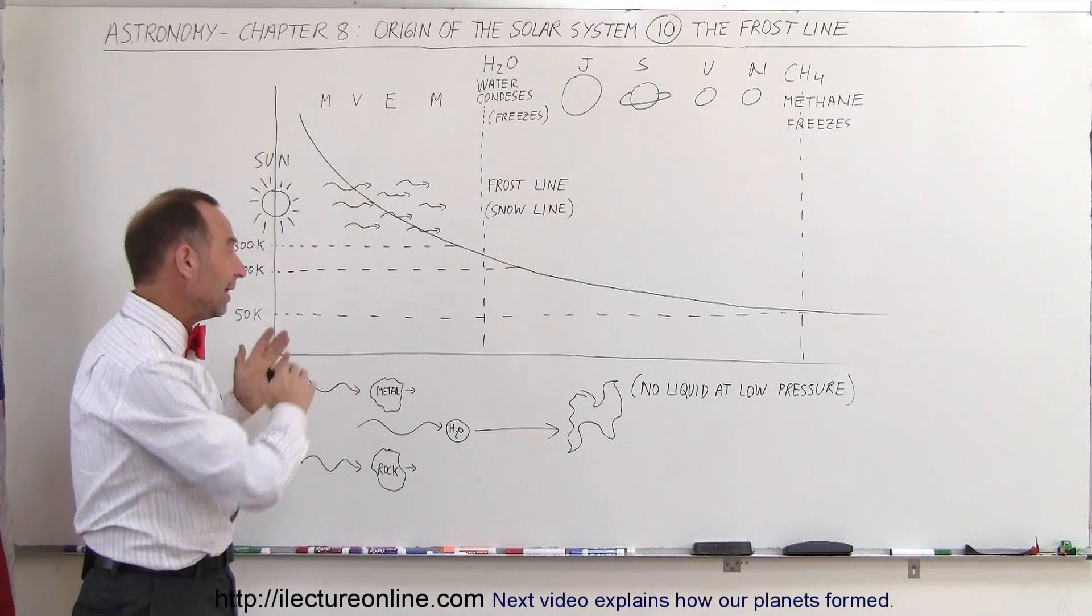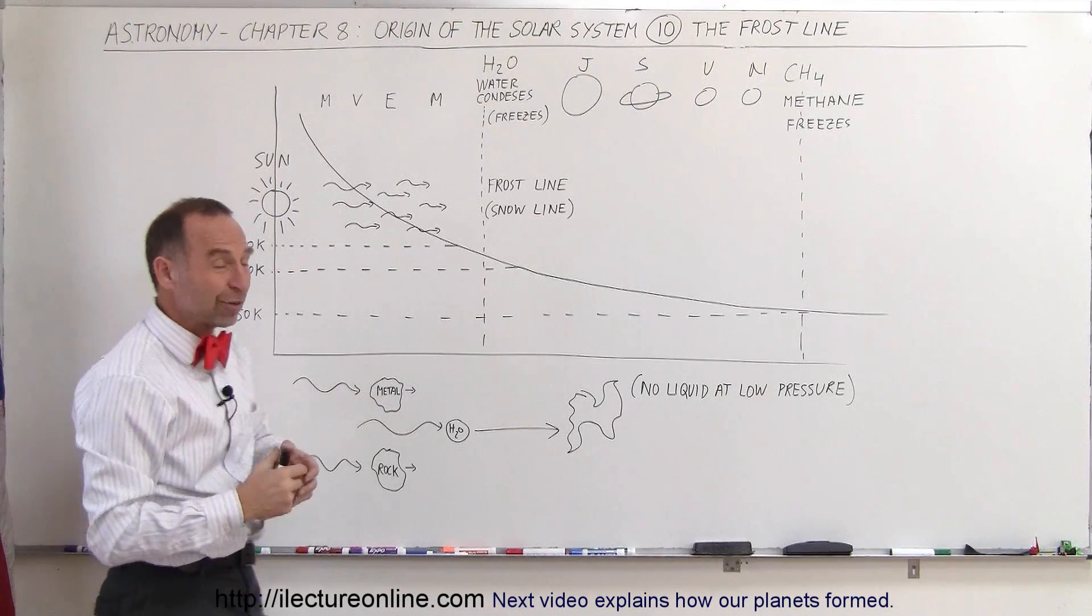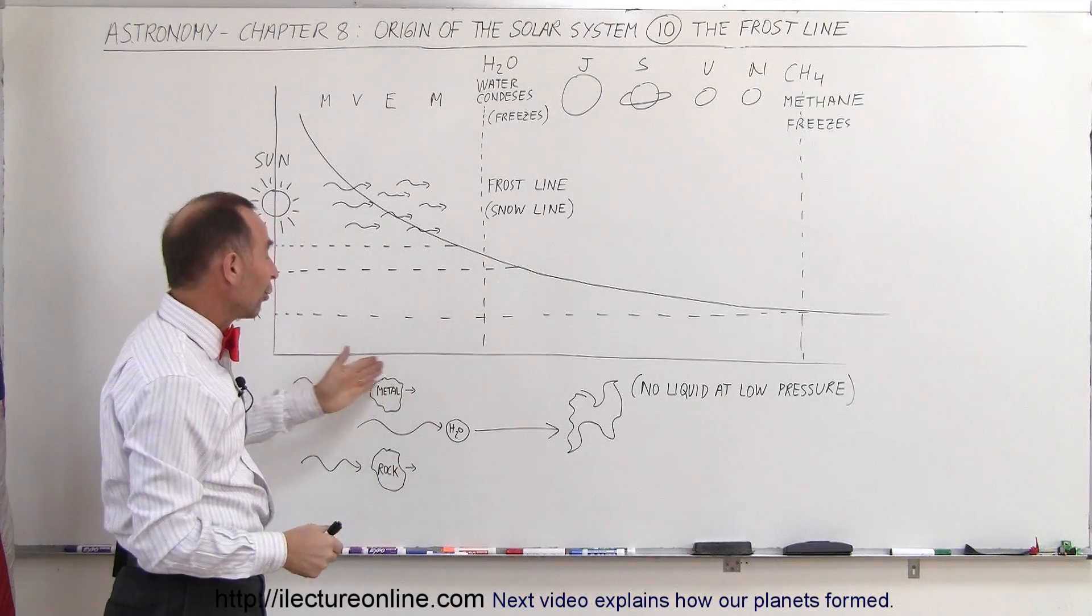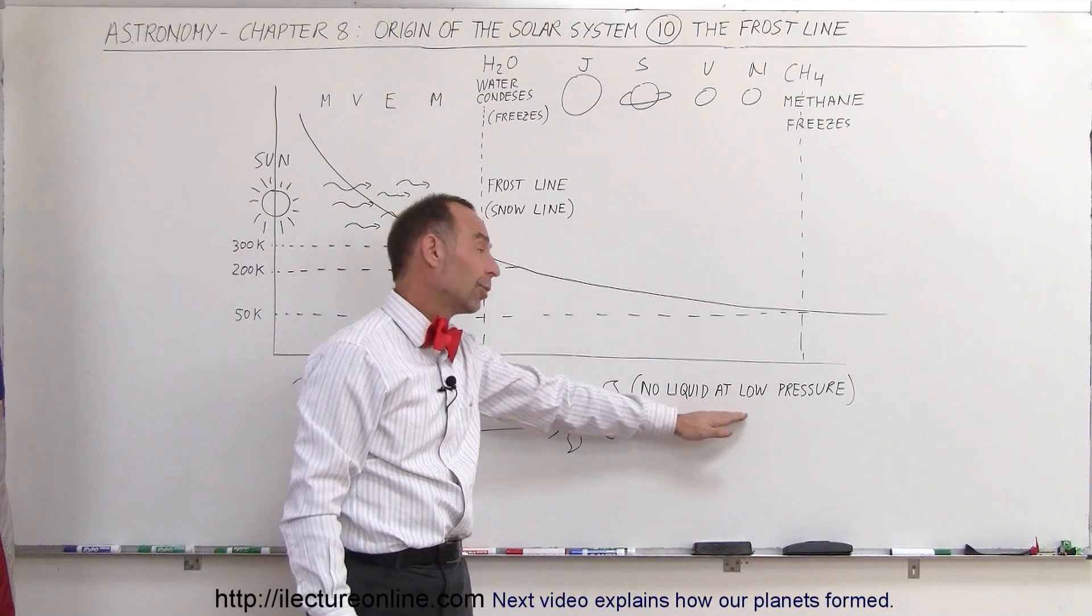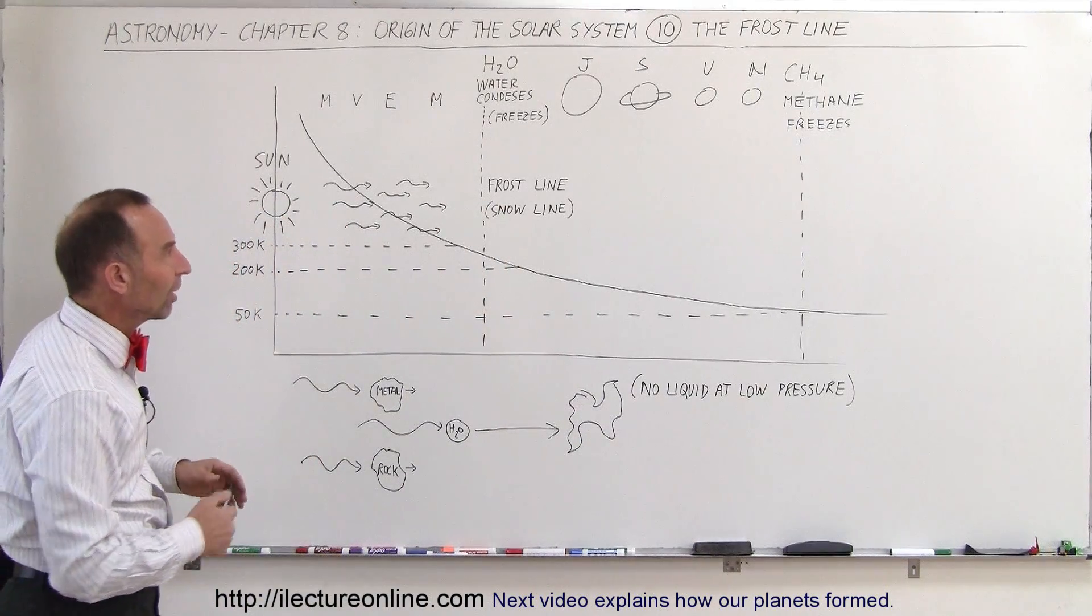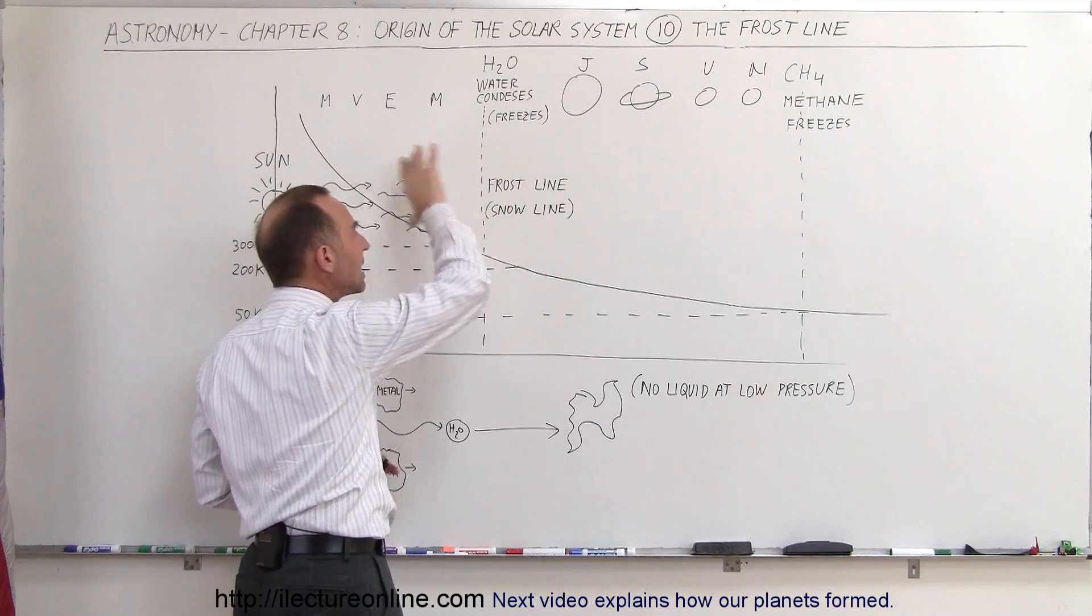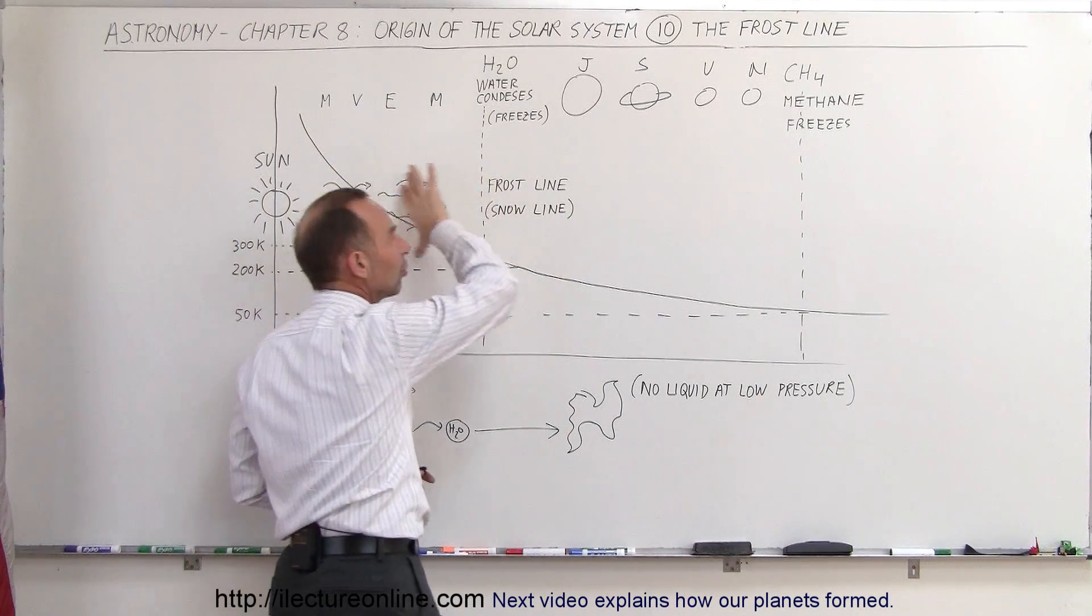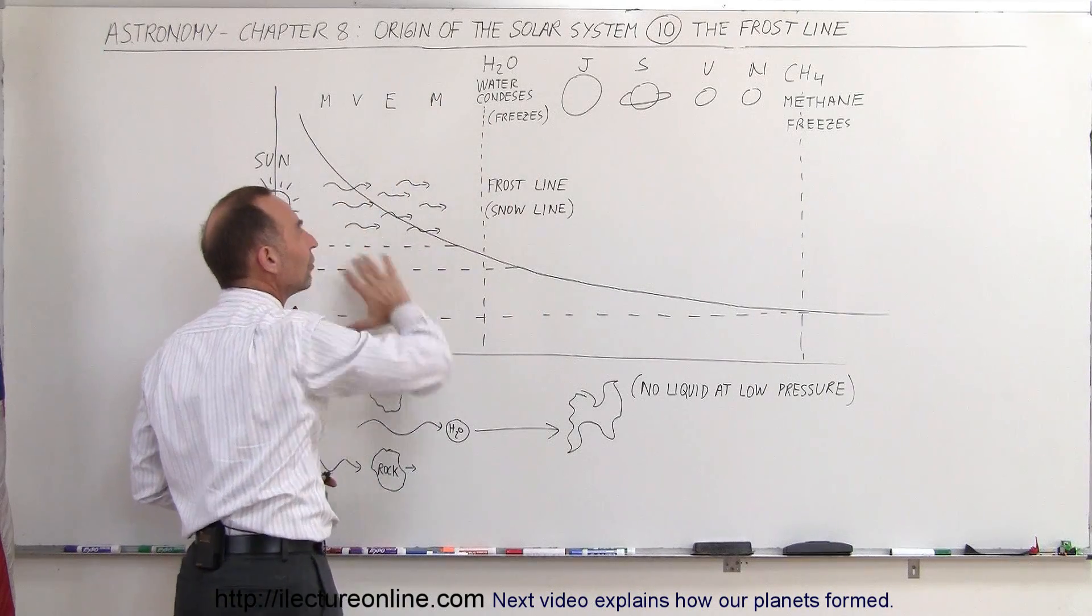Now notice, in space where there's no pressure, no atmospheric pressure, where it's the vacuum of space, water goes from vapor directly to solid and skips the liquid state. At low pressures, liquid water does not exist. So in this region, all the light gases - any hydrogen, helium, water vapor - everything would just get pushed off into the outer regions and the inner solar system would simply be devoid of that.